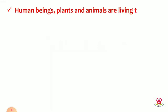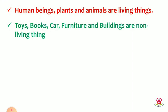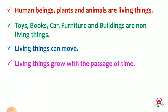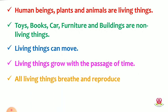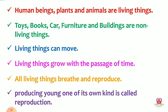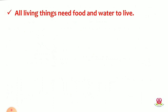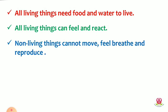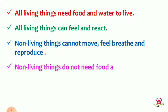Human beings, plants, and animals are living things. Toys, books, cars, furniture, and buildings are non-living things. Living things can move, grow with the passage of time, breathe, and reproduce. All living things need food and water to live and can feel and react. Non-living things cannot move, feel, breathe, or reproduce, and do not need food and water.